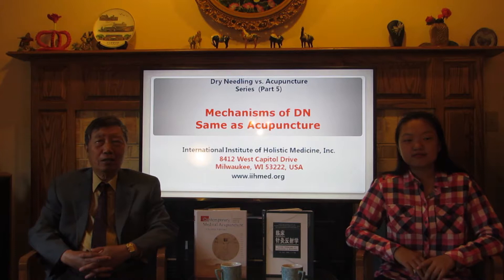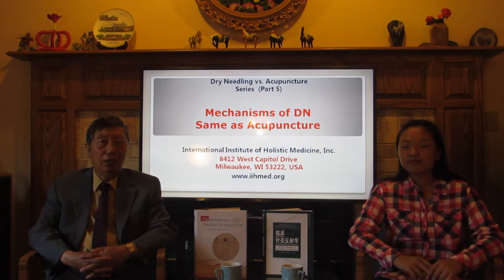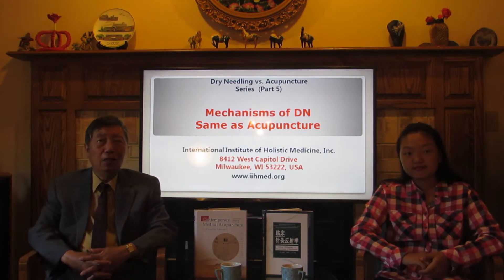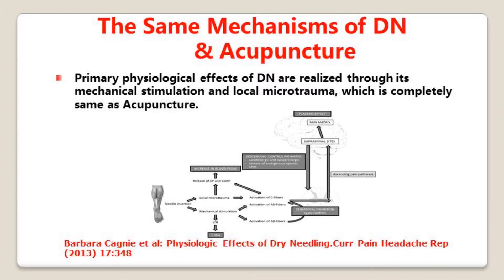In 2013, Barbara Cagney and colleagues published an article titled 'Physiological Effects of Dry Needling.' An overview of the potential dry needling physiological effects is shown in the attached figure, which indicates that the primary physiological effects of dry needling are realized through its mechanical stimulation and local microtrauma. It looks that the effects of dry needling are completely the same as acupuncture.